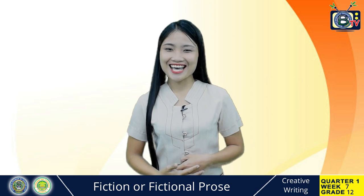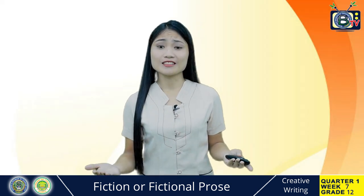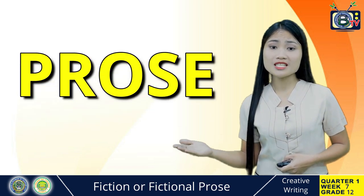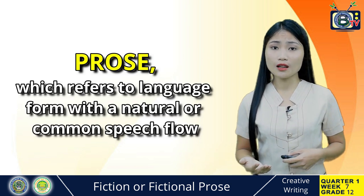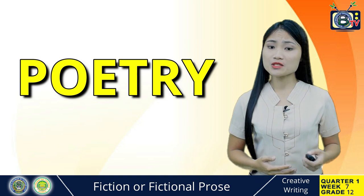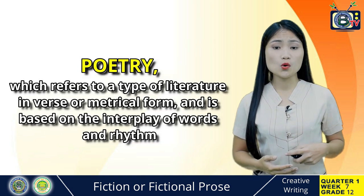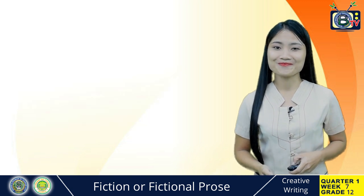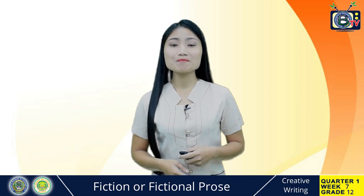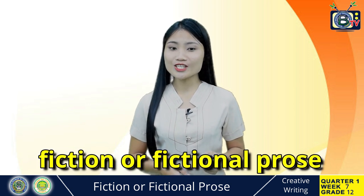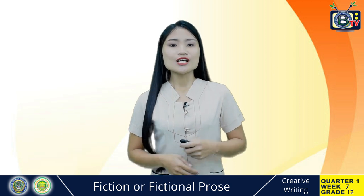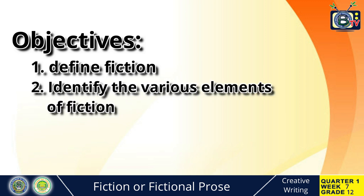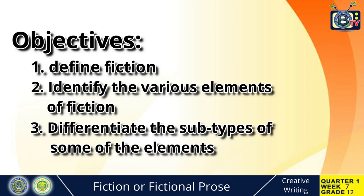In your previous lesson, you learned that there are two divisions of literature, namely prose, which refers to language form with a natural or common flow of speech, and poetry, which refers to a type of literature in verse or metrical form and is based on the interplay of words and rhythm. Today, we will deal more on the popular type of prose, which is fiction or fictional prose. For this session, we will be able to define fiction, identify the various elements of fiction, and differentiate the subtypes of some of the elements.